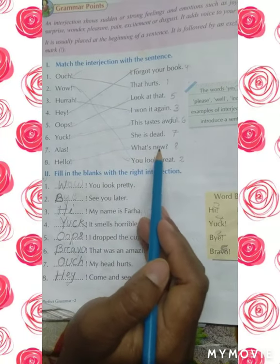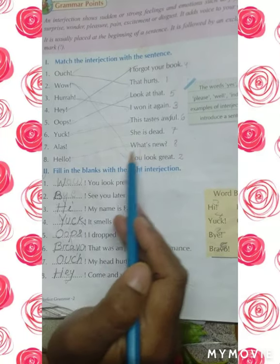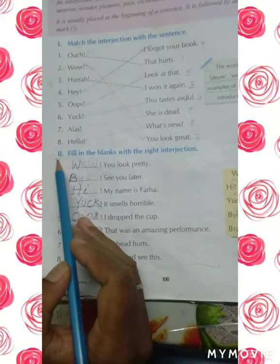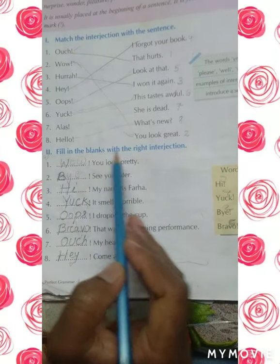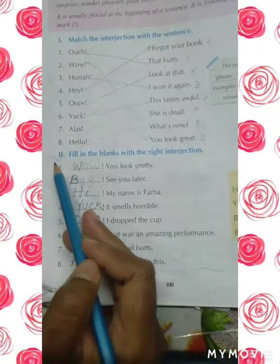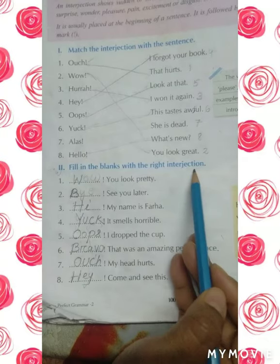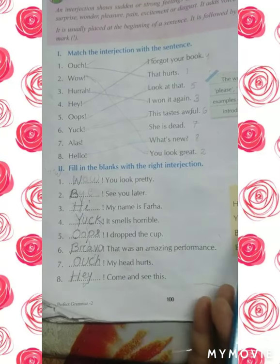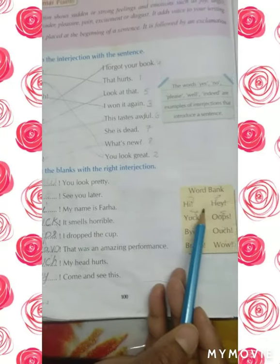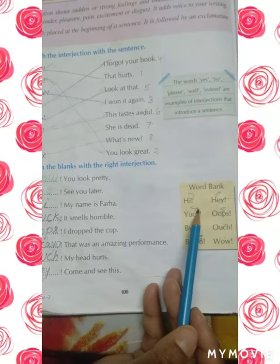Now let us see number two. Fill in the blanks with the right interjection. Here you can see the word bank. From here we will find the right interjection.